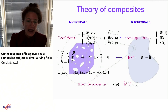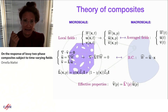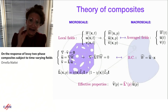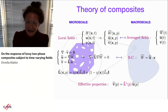L star depends on two things: the chi function — the geometry of the material — and L1 and L2, the material properties. Unless you work in a very special setting, it is basically impossible to find L star explicitly, because chi of x is very difficult to know precisely. We may have some information like the volume fraction, and perhaps some other information, but no more than that. So what we actually want to do is find bounds — the maximum and minimum output function we can have.